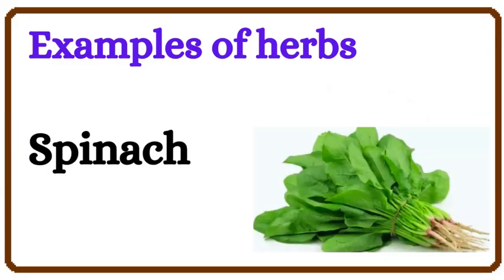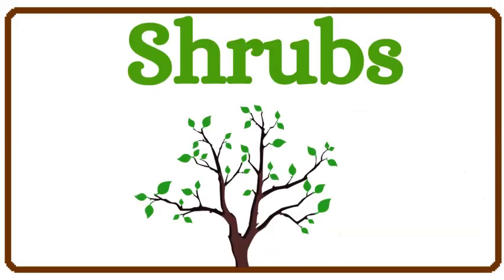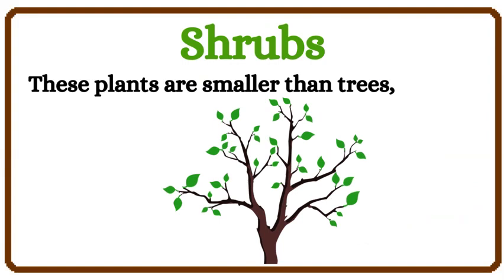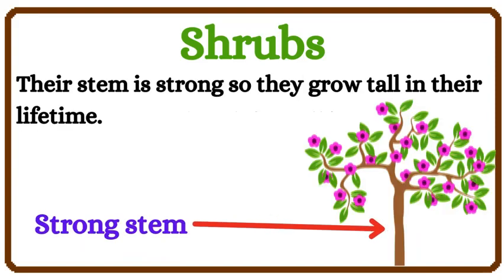Fenugreek. And shrubs — these plants are smaller than trees, but they have very thin and strong stems. Such plants are called shrubs. They have very thin and strong stems.